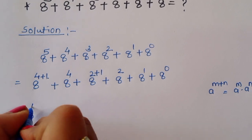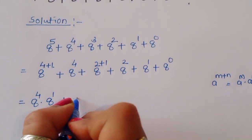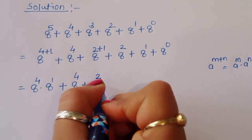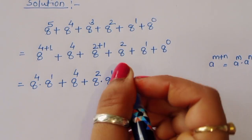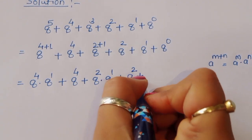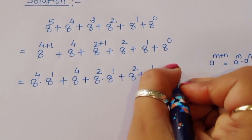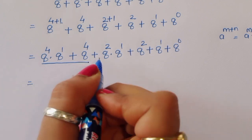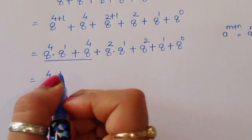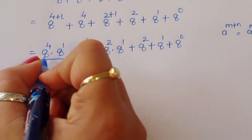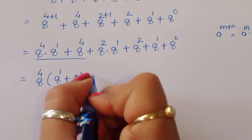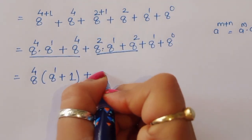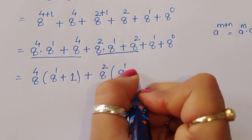Using this formula, we get 8 power 4 times 8 power 1 plus 8 power 4, plus 8 power 2 times 8 power 1 plus 8 power 2, plus 8 power 1 plus 8 power 0. Now we can take 8 power 4 common from the first two terms, leaving 8 power 1 plus 1. Then from the next pair, take common 8 power 2, leaving 8 power 1 plus 1.